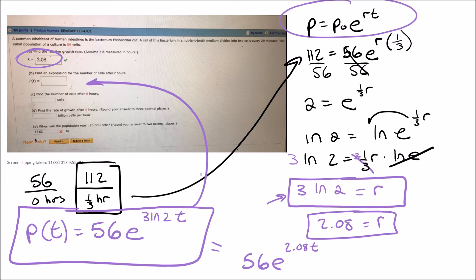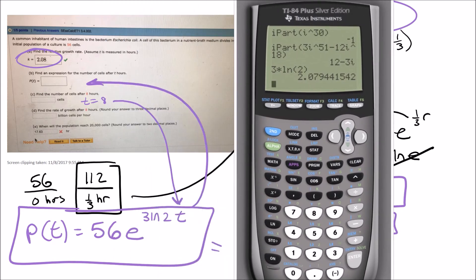Okay, and then the question says find the number of cells after eight hours. So then all you need to do is substitute into your equation. t is 8, so you're going to put your t is 8 into that equation there. So I would get 56 times e to the 3 times the ln of 2 times 8.